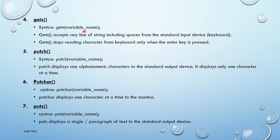These are all the input functions. Now the output functions. Putch — syntax: putch(variable_name). Putch displays any alphanumerical character to the standard output device and displays only one character at a time. Putchar is similar to putch — syntax: putchar(variable_name). Putchar also displays only one character at a time to the monitor. Puts — used for strings. Syntax: puts(variable_name). Puts displays a single line or paragraph of text to the standard output device.